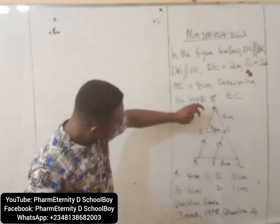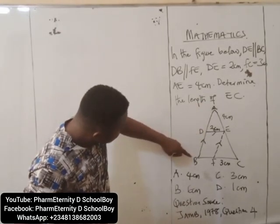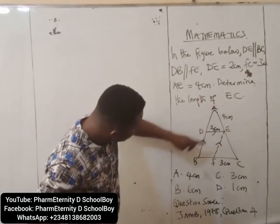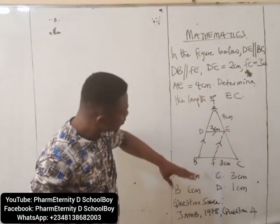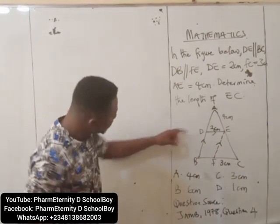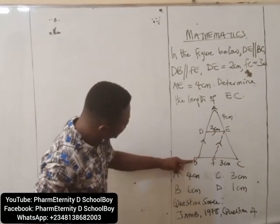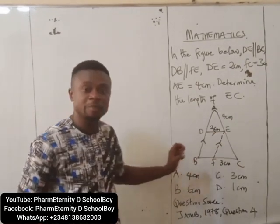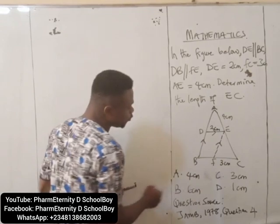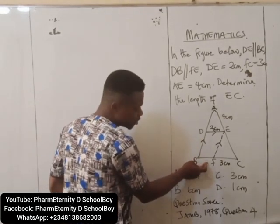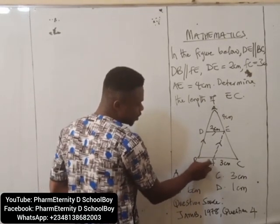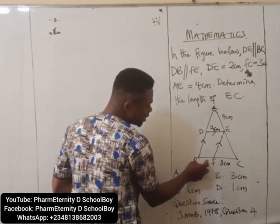From the diagram, ABC is a triangle and DEBF is a parallelogram. To answer this question, we should first of all determine the length BF.